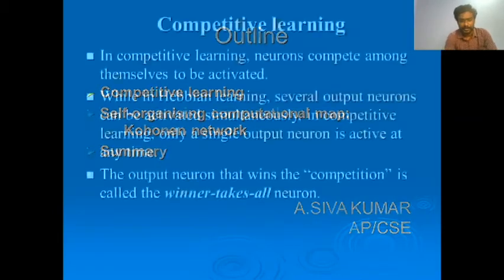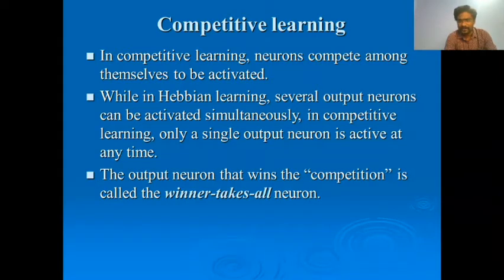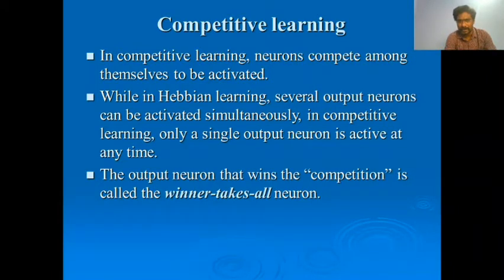First, about competitive learning. In competitive learning, the neurons compete among themselves to get activated. Comparing with Hebbian learning, several output neurons can be activated simultaneously. But in competitive learning, only a single output neuron is activated at any time. That's the key difference between these two learning approaches.